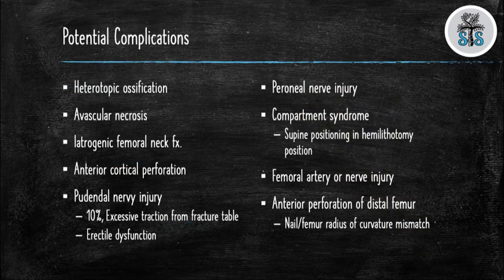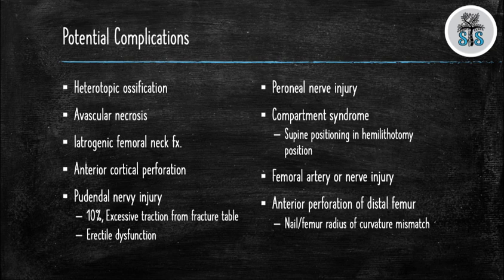There are many potential complications with this injury. These include heterotopic ossification, avascular necrosis, and iatrogenic femoral neck fractures. Perforation of the anterior cortex can occur if the starting point for an antegrade nail is too anterior. Pudendal nerve injury can occur with excessive traction from a fracture table — reported in the literature 10% of the time — and would lead to erectile dysfunction. Peroneal nerve injury can occur. Compartment syndrome of the non-injured leg can occur when placing it in the hemilithotomy position. Femoral artery or nerve injuries can occur. Anterior cortical perforation of the distal femur can occur if there is a mismatch in the radius of curvature between the implant and the femur, or if the starting point is too posterior for an antegrade nail.